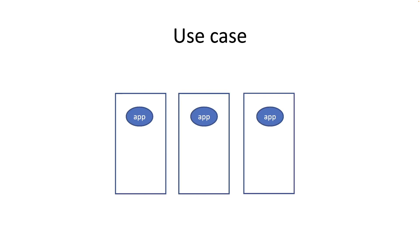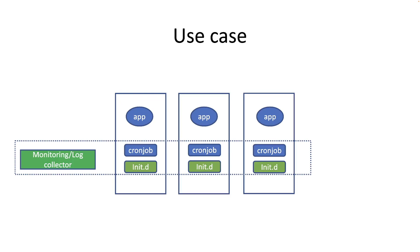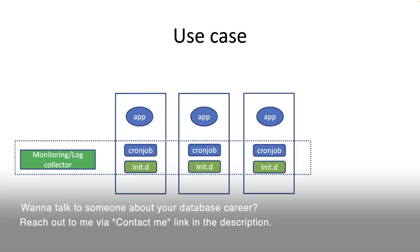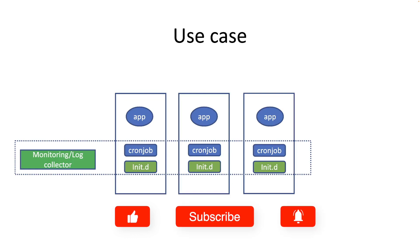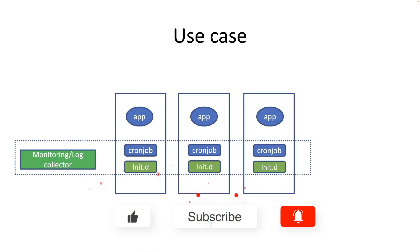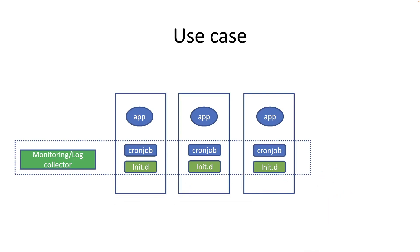In the past, what we used to do when we want to monitor or do some kind of log collection on all of your application machines is basically create a cron job or create custom shell scripts and put them in the init.d directory. These shell scripts would be started when the nodes boot up and they would automatically kick off to do the monitoring or log collection.